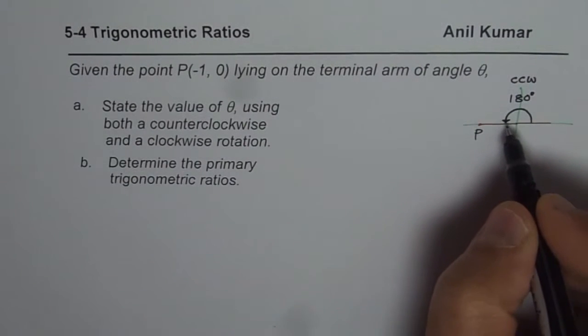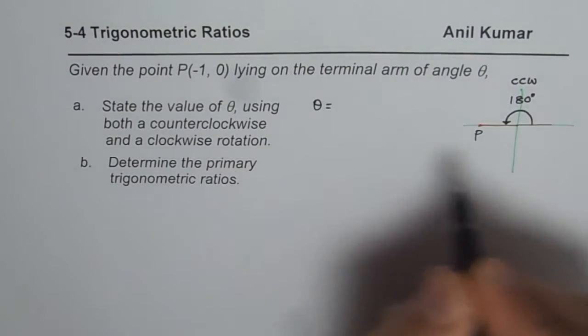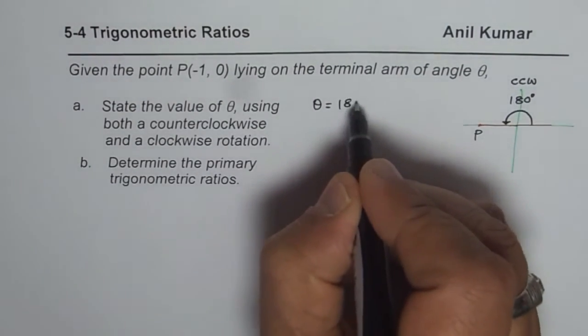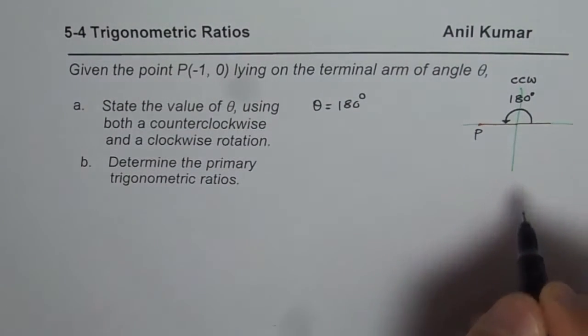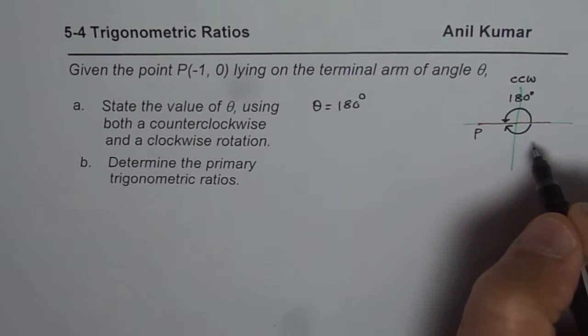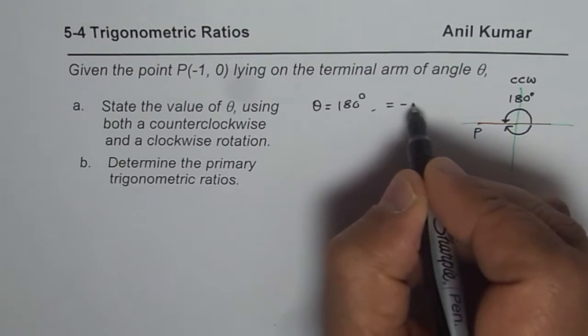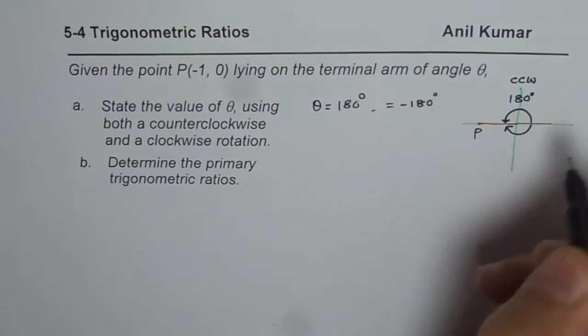Counterclockwise angles are always positive and therefore we could write this angle theta as equals to 180 degrees. However, if you go clockwise, then clockwise angles are negative, so this could be written also as equals to -180 degrees.